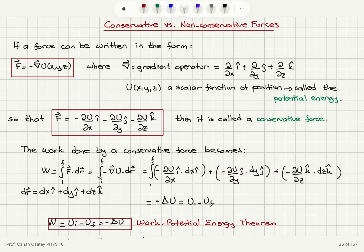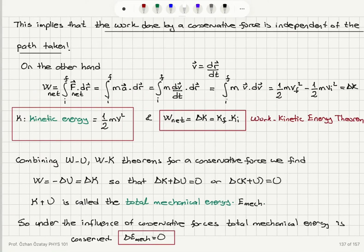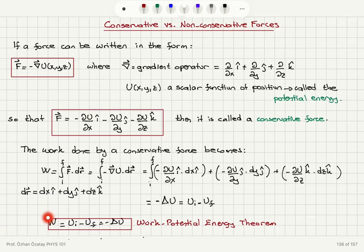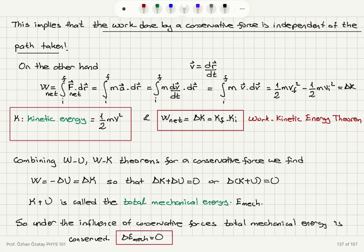For conservative forces, the work done by the force equals minus the change in potential energy. This also implies that the work done by a conservative force is independent of the path taken, because the path integral only depends on the initial and final values of the potential energy function — not on how we travel from the initial point to the final point.